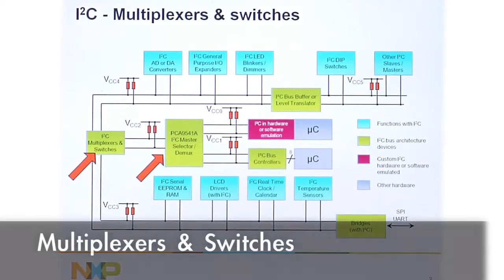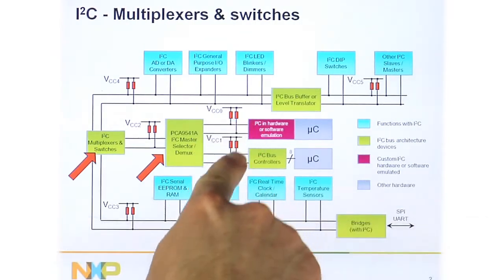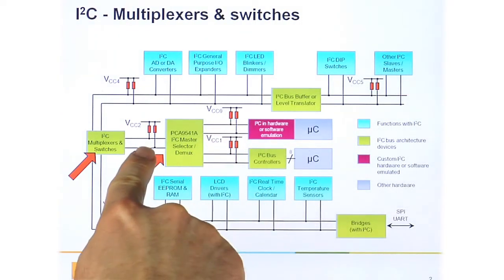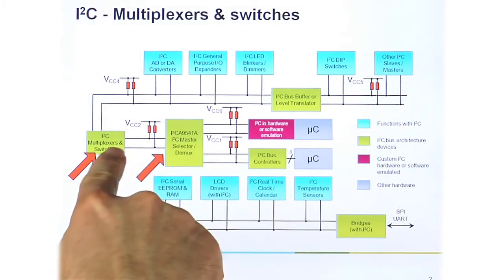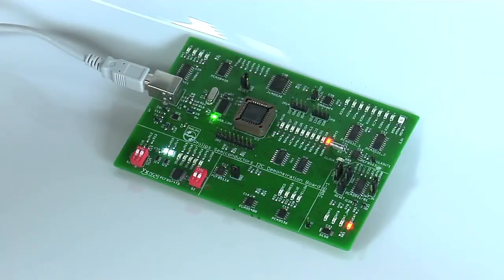Here is a presentation of multiplexes and switches. We have two devices to one device, a 2-to-1 DMUX, and then we have multiplexers that take a single I2C bus and branch them out.